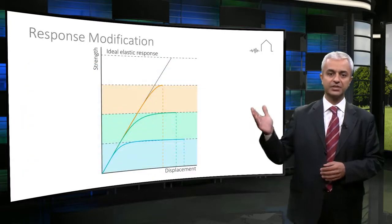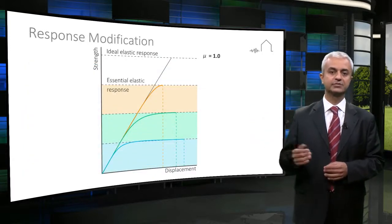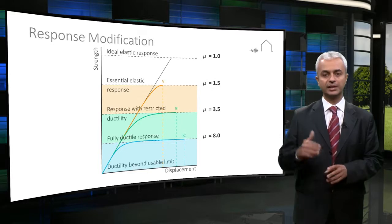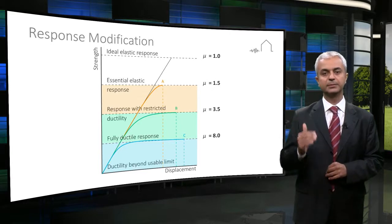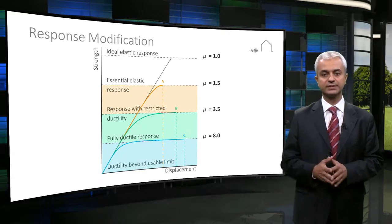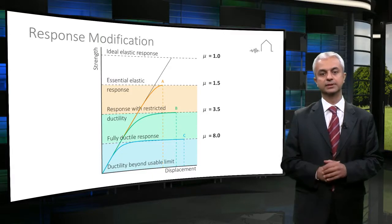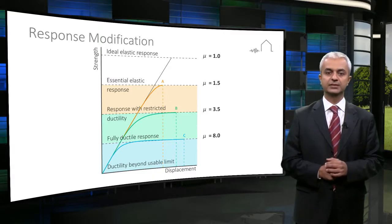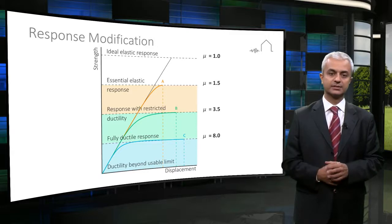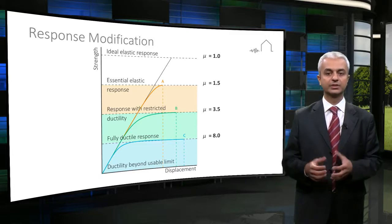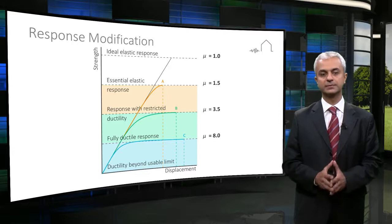In this graph, the relationship between ductility and strength can be seen. It shows the reduction in strength demand to resist seismic forces with respect to ductility level. As described in the previous sections, inelastic deformations and thus controlled damage are the basis of modern seismic design.